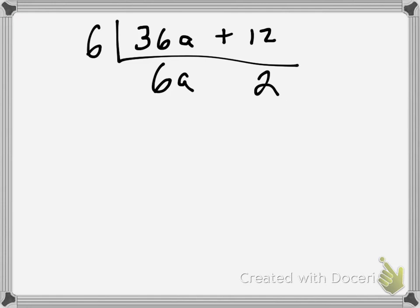Is there anything that can go into 6a and 2? Well, I could factor out a 2. 2 would go into 6a 3 times, and I'd still have that 3a. And 2 would go into 2 one time.